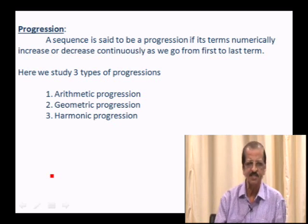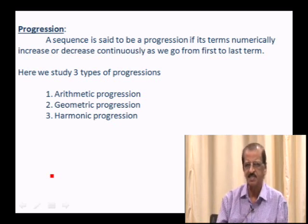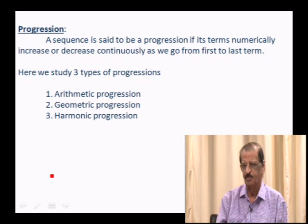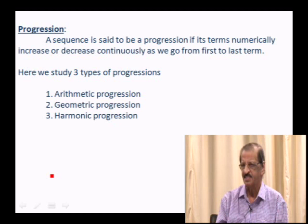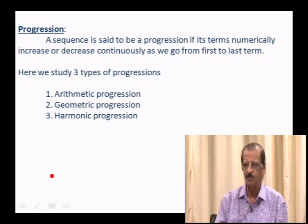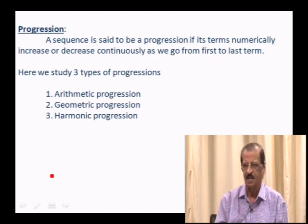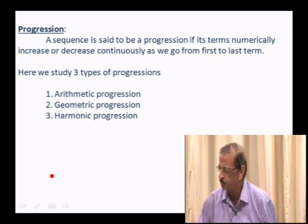Progression: you have learnt about progressions in high school. We are going to discuss the three progressions once again in detail. A sequence is said to be a progression if its terms numerically increase or decrease continuously as we go from the first to the last term. We study three types: arithmetic progression, geometric progression, and harmonic progression.